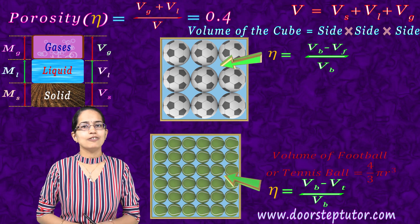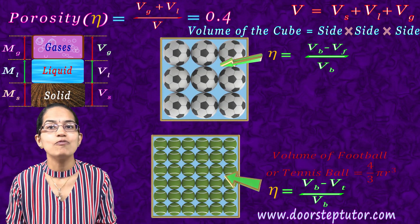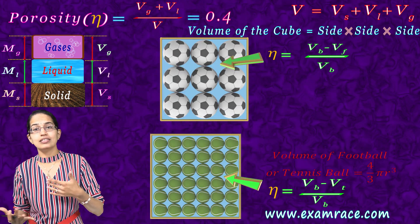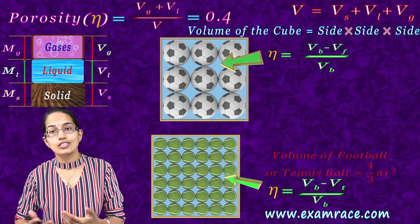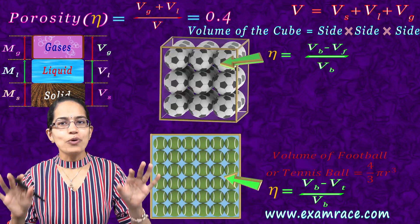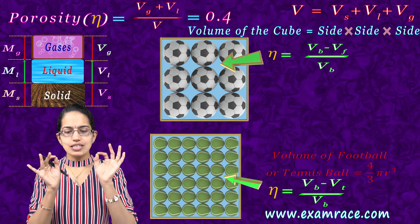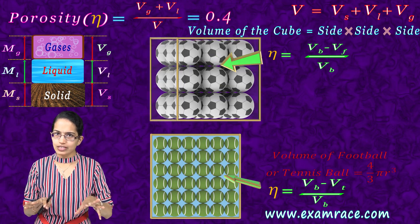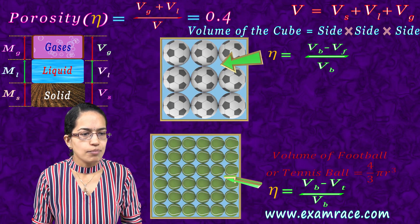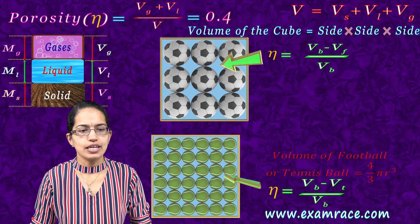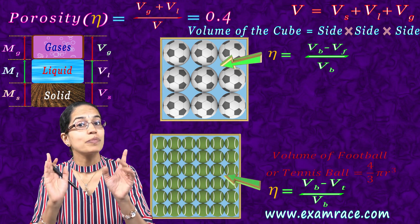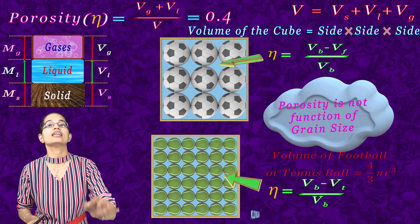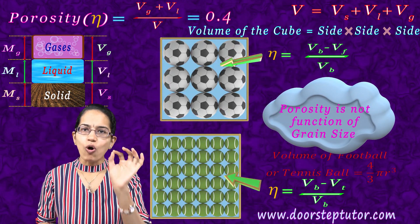When I calculate the values, interestingly what comes up is the same value for porosity in both cases. Some might think that when we decrease the radius the porosity would increase or decrease, but nothing like that — the porosity remains the same. This means the same amount of porosity means the same amount of water is trapped between the spaces, regardless of ball size. This is very important: porosity is not a function of the grain size.